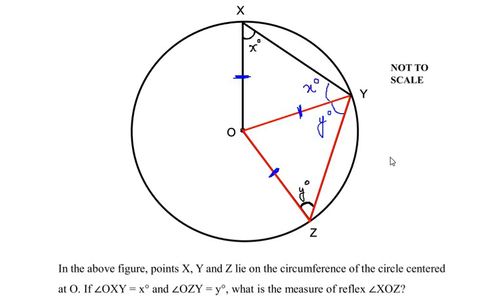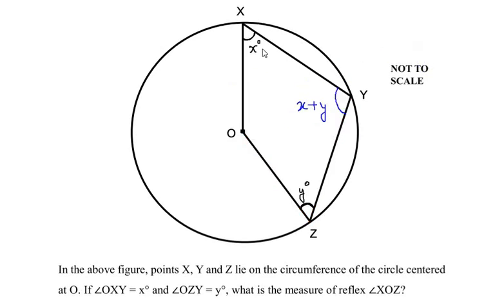Now let us combine the total angle at Y. We get it as a sum of x degrees and y degrees, so angle XYZ is equal to x plus y degrees.